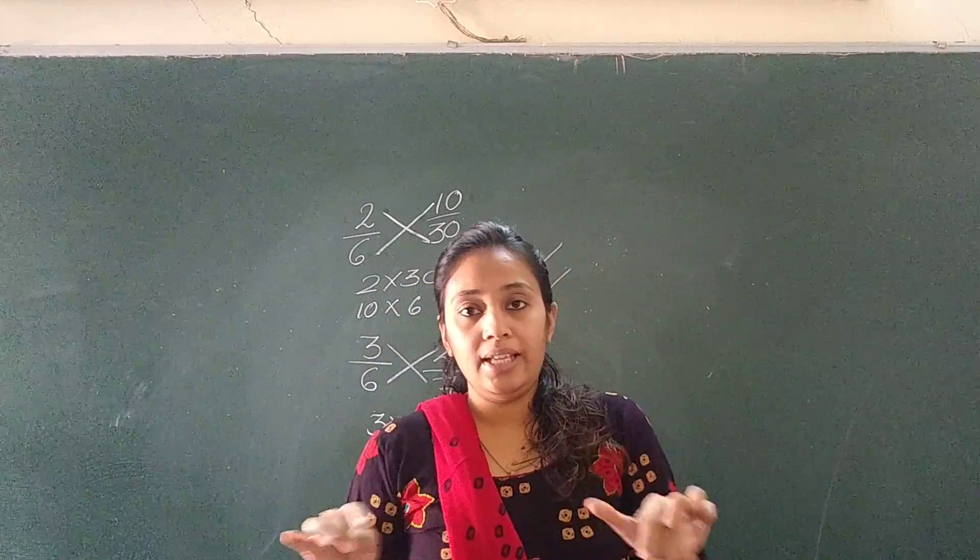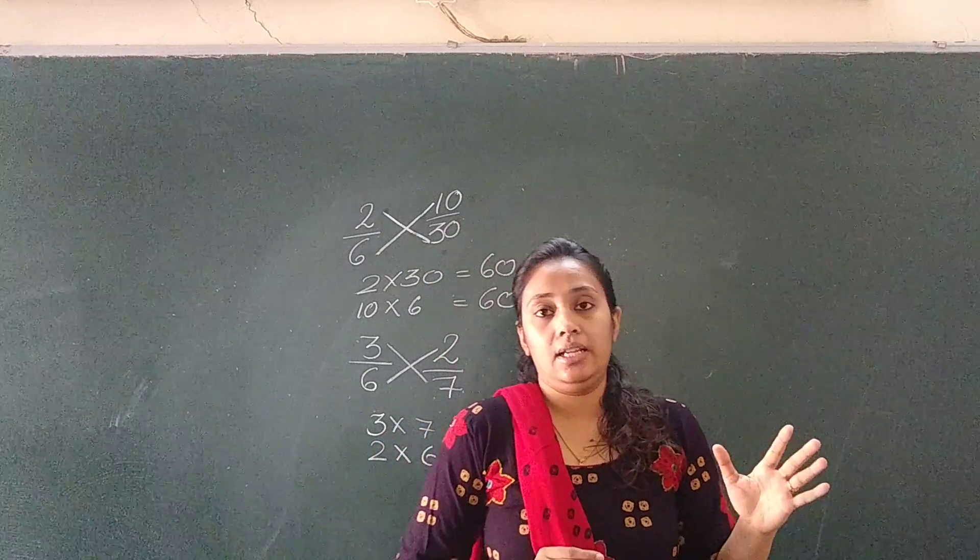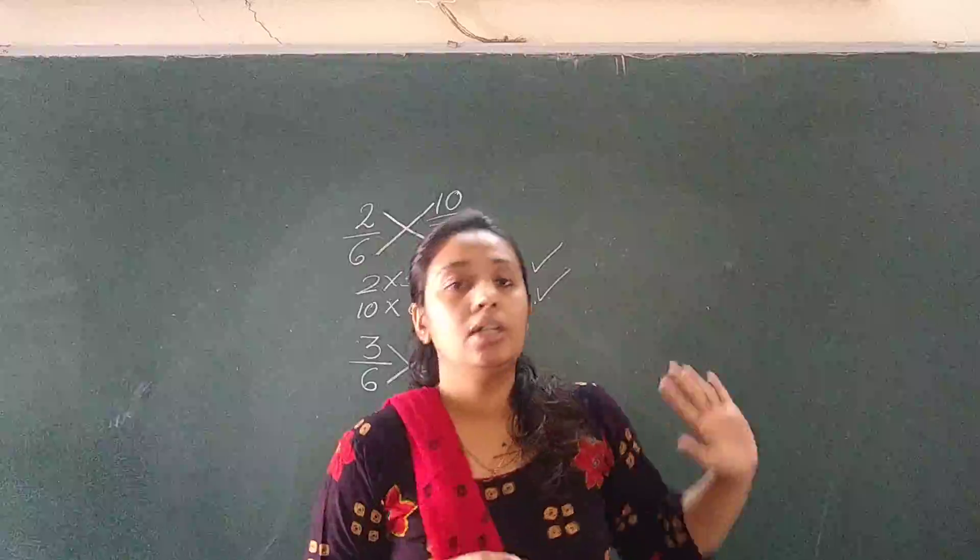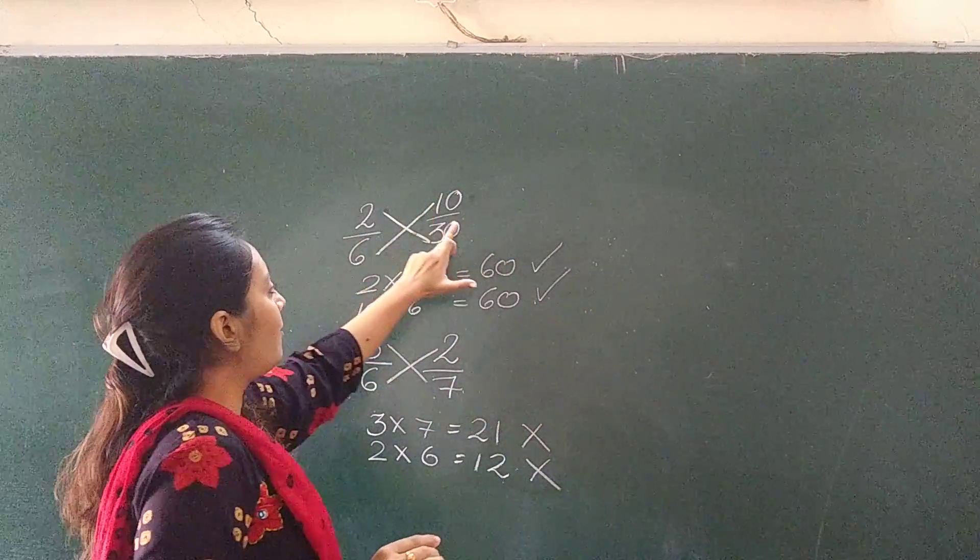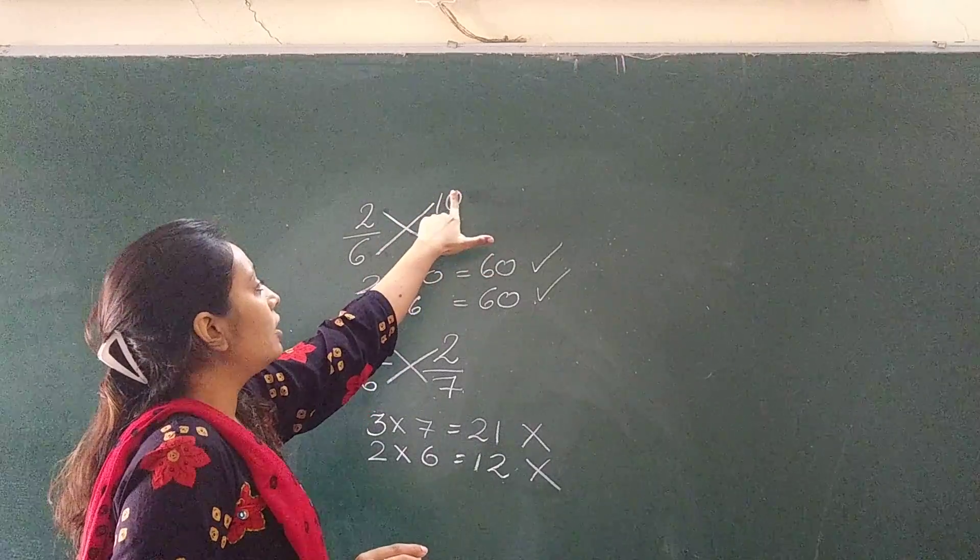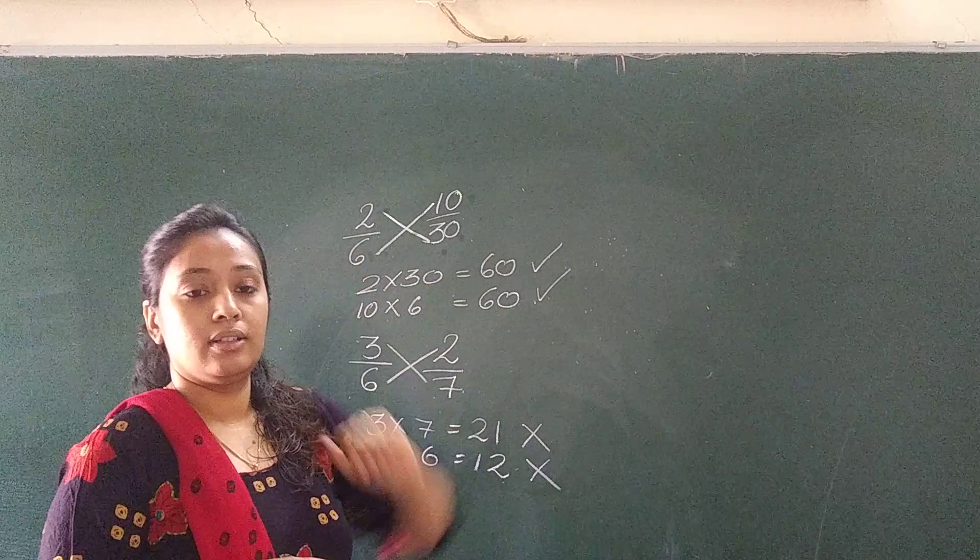This is the formula for equivalency check. Be very much careful. This fraction 1 and fraction 2: the numerator 1 multiplied by denominator 2, because it is fraction 2, and numerator 2 multiplied by denominator 1.